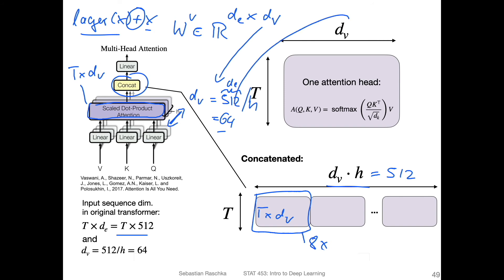So again, one attention head is T times dv, we concatenate and get this T times 512 here in this concatenation step. So that's essentially what's going on in the multi-head attention, we repeat this multiple times, this scaled dot product attention, each time with different weight matrices, and then we concatenate the results.